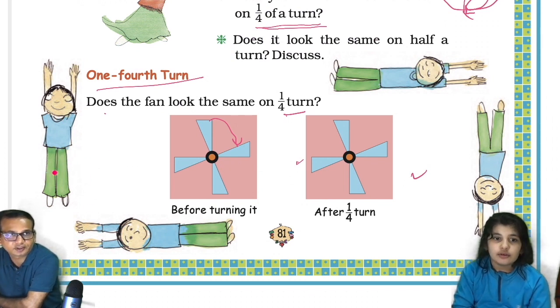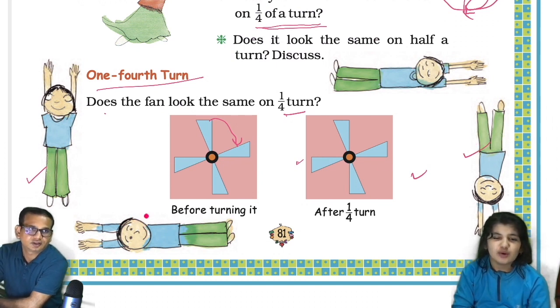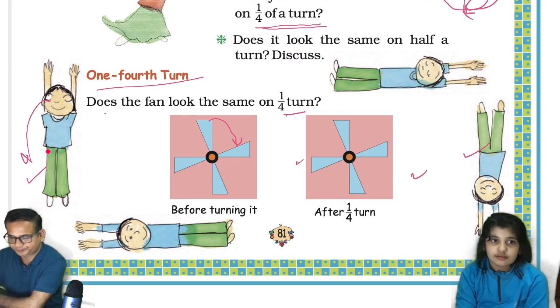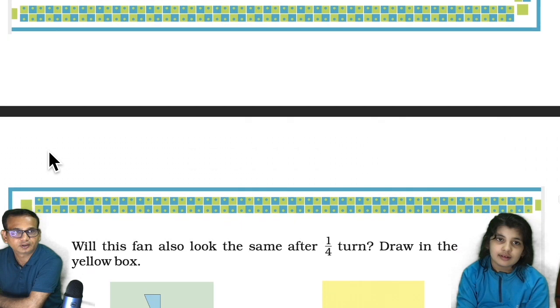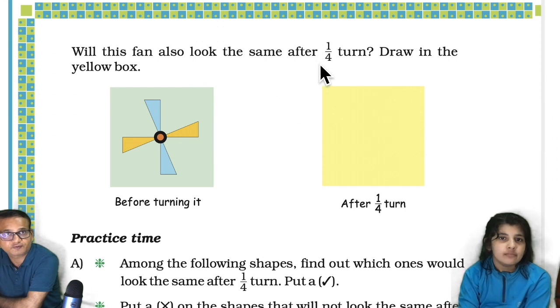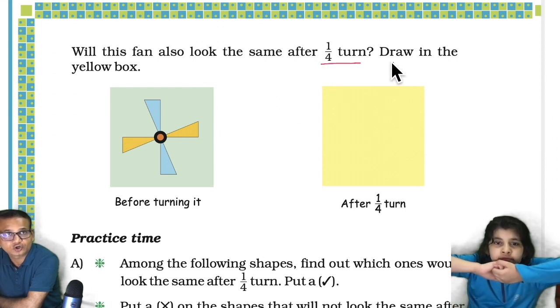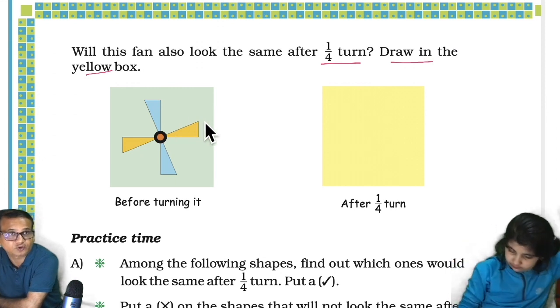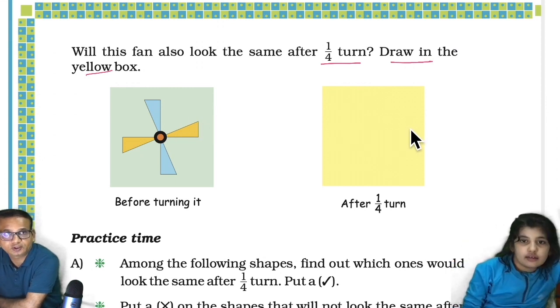He's doing yoga. This is a half turn here and then quarter turn here. Quarter turn means here to this side, right? Now will this fan also look the same after a quarter turn? Draw in the yellow box. No, it will not look. It will look like this, I'll tell you. I'm drawing for you, Avisha.